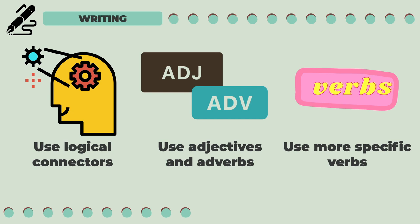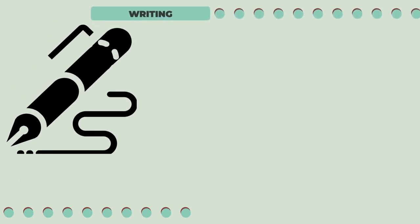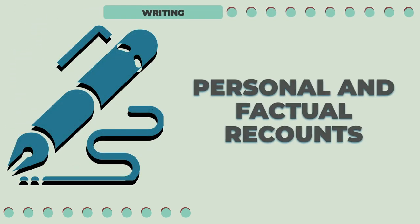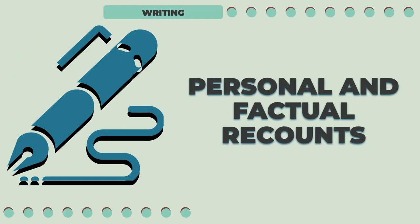For example, instead of making use of the word said, you may write whispered instead. That's it for our video on personal and factual recounts. For more videos on the different types of texts, please check the description below. Please don't forget to like, share, and subscribe for more English lessons. Thank you!